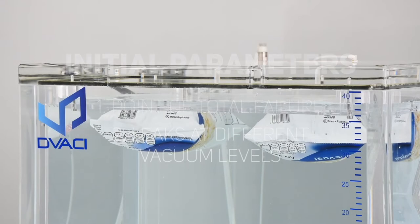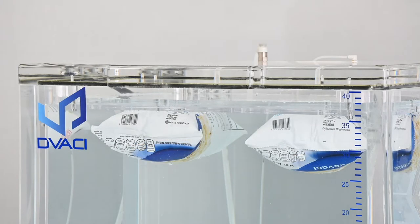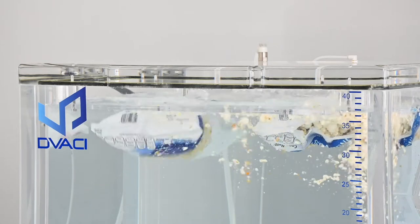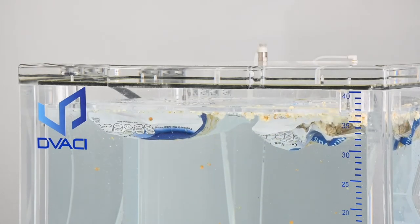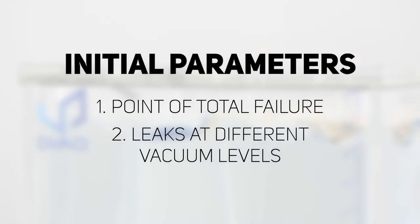To determine the maximum level of vacuum that a package can withstand, slowly increase the vacuum level until complete failure of the package is reached. Using multiple test samples will yield a more reliable result.